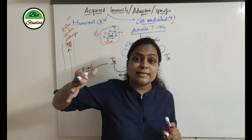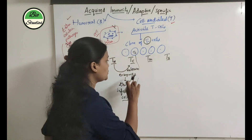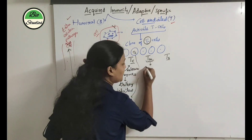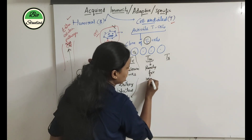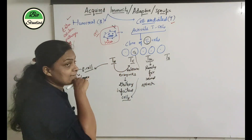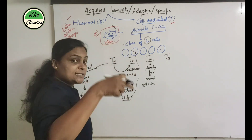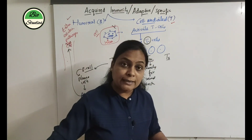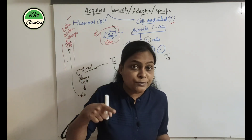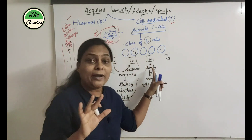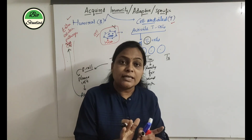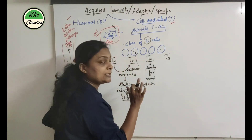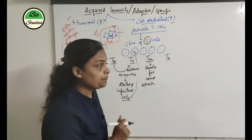The cytotoxic T-cell will destroy the infected cell. TM cells are memory T-cells, so they are ready for the second attack. If there are memory cells, they help with the secondary immune response — when the same pathogen attacks your body next time, the TM memory cells are already primed with information about that pathogen.